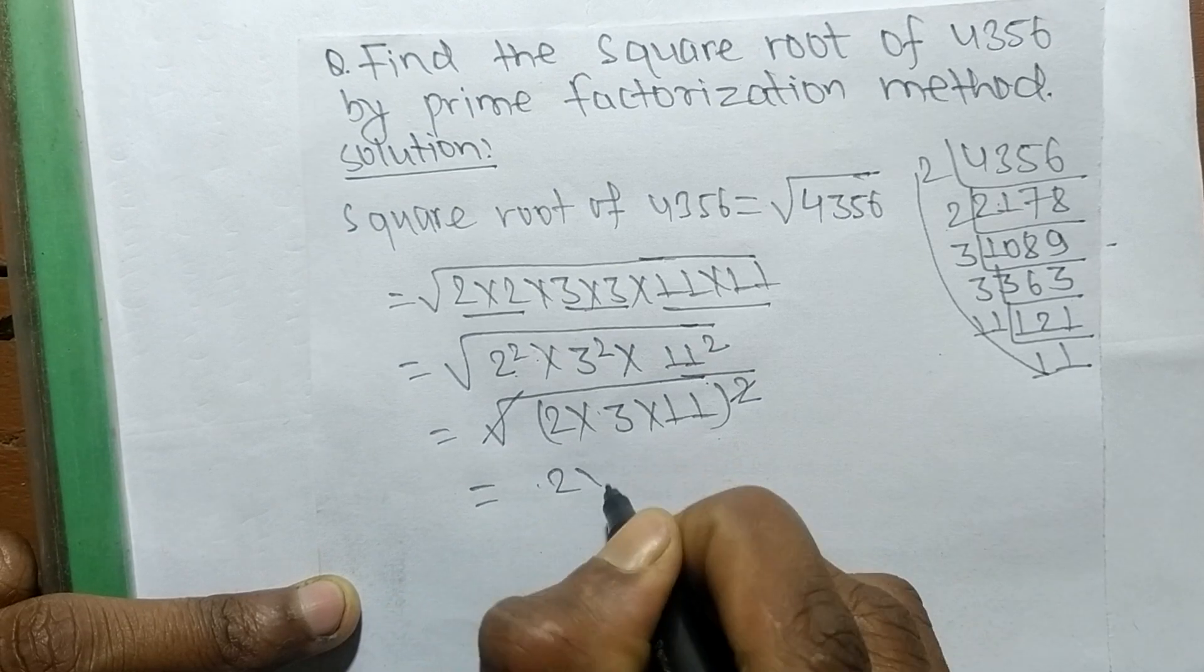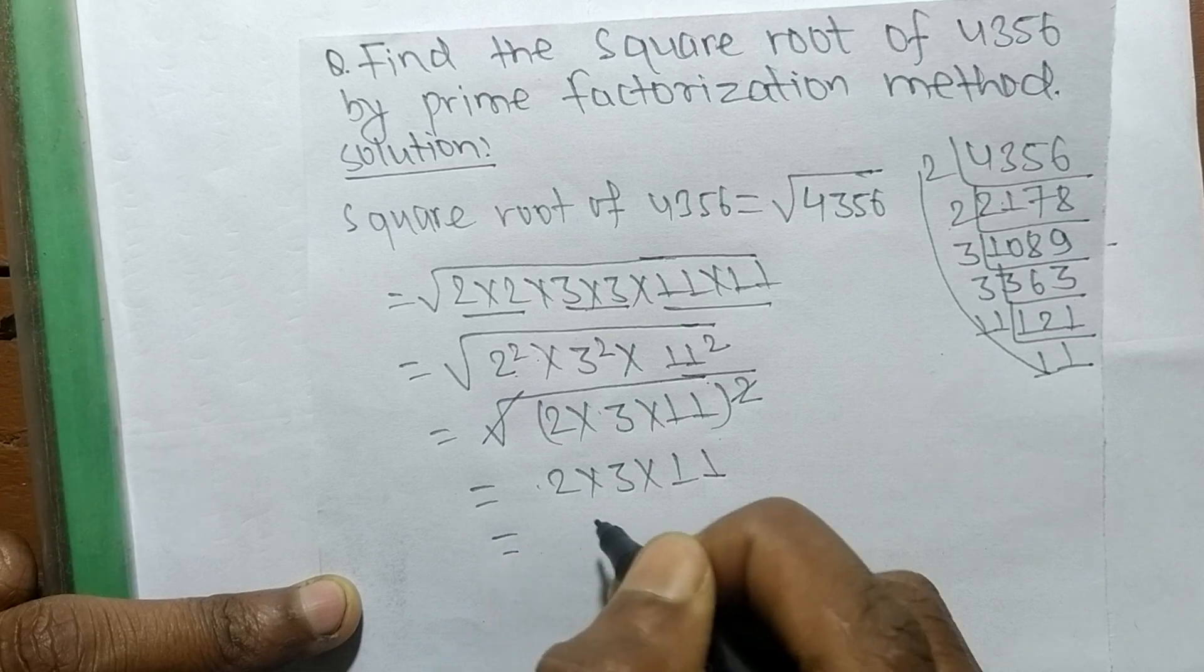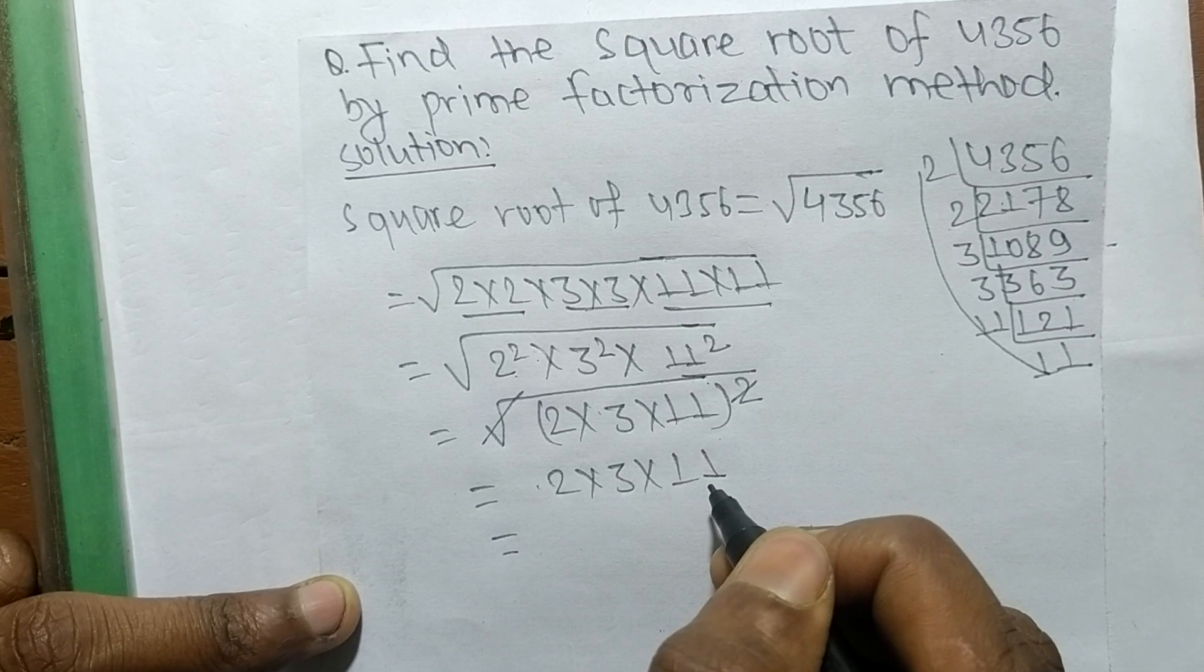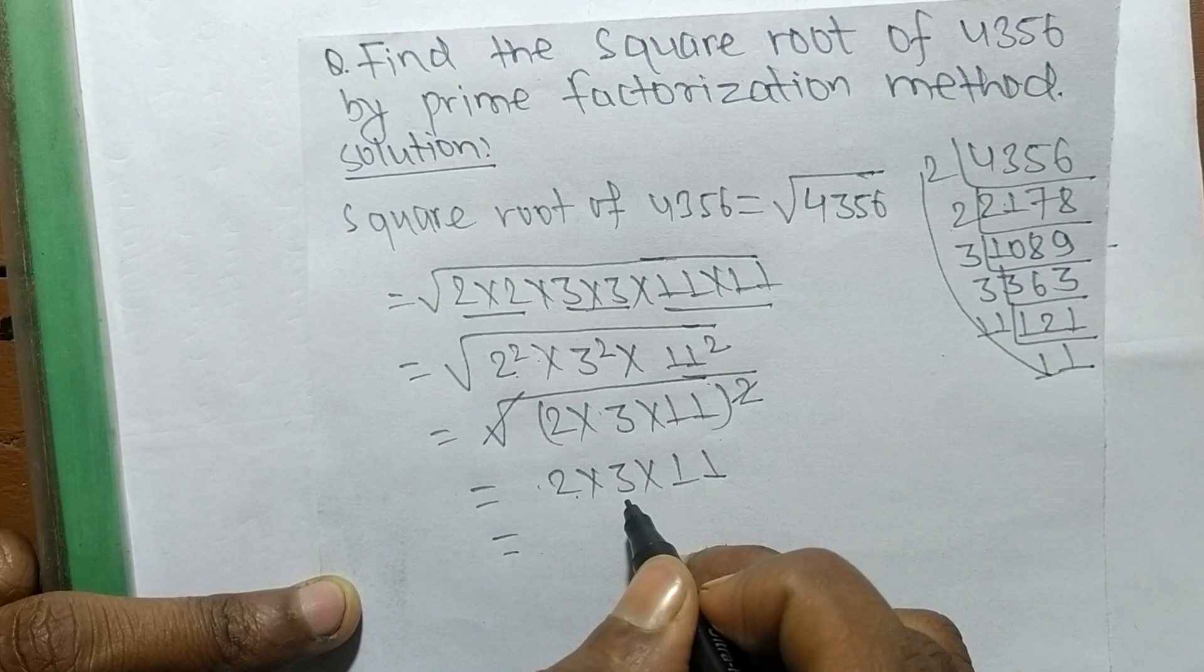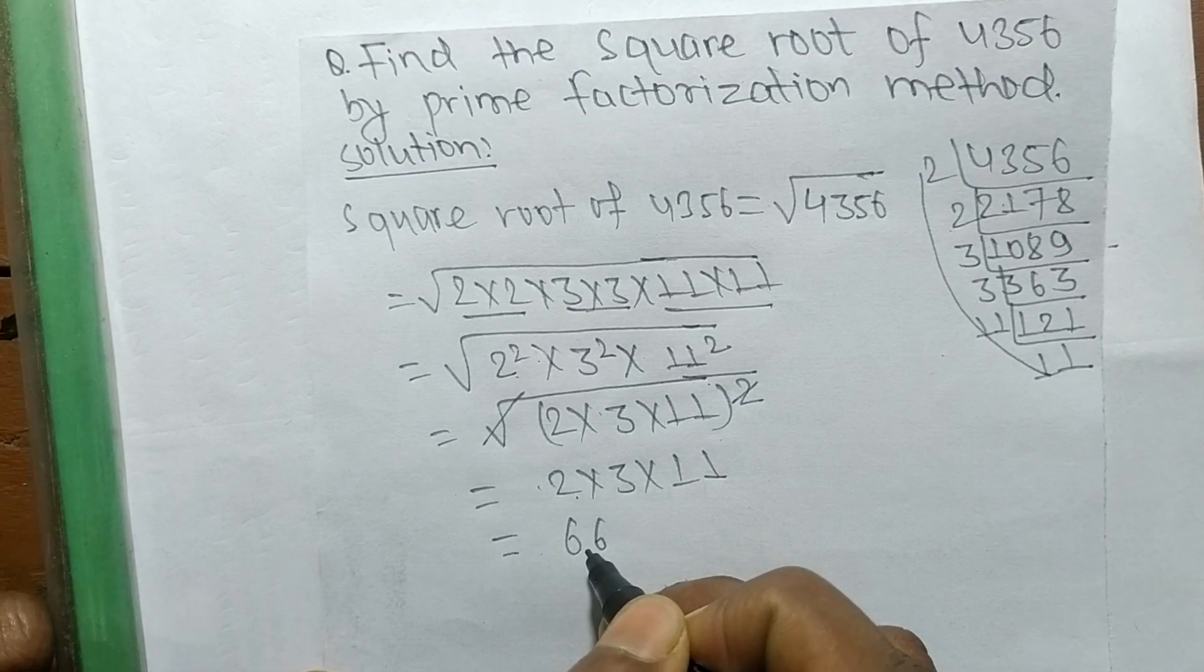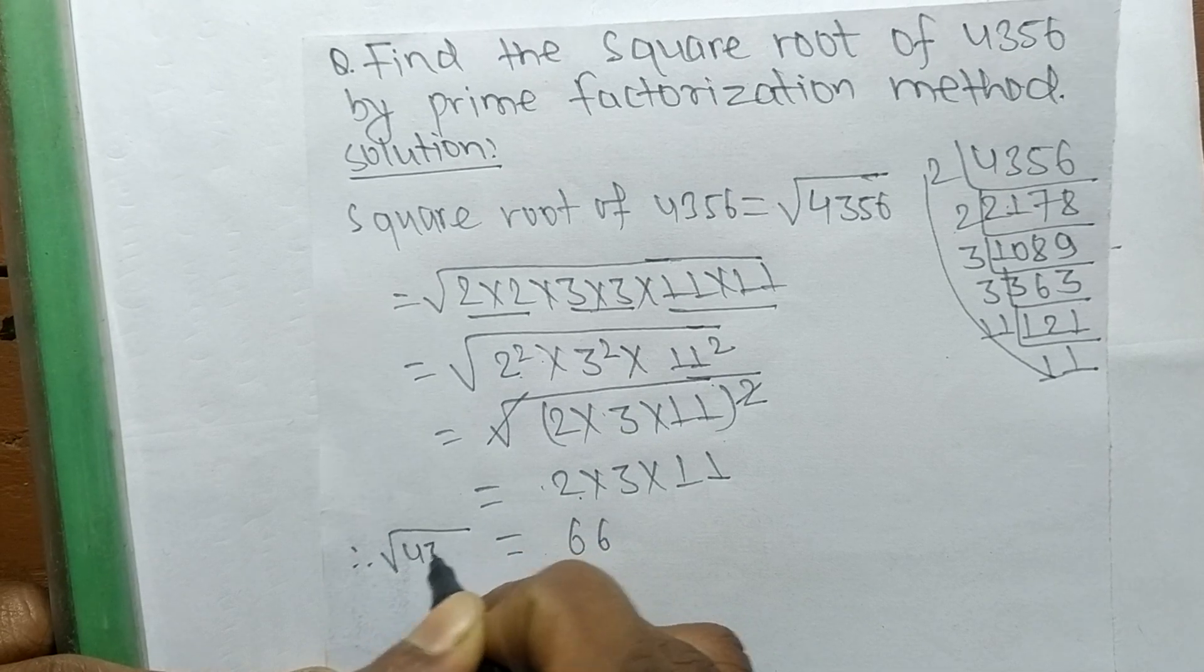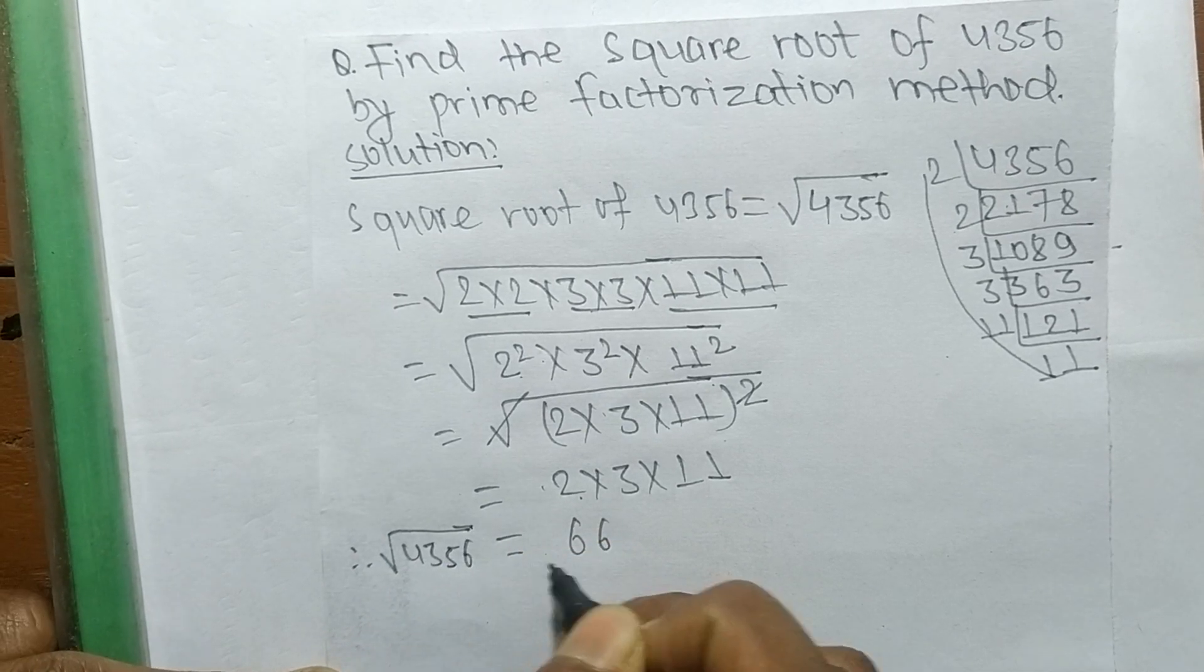So the remaining numbers are 2 into 3 into 11. Multiplying all these numbers, we get 2 times 3 is 6, and 6 times 11 is 66. Therefore, the square root of 4356 is equal to 66.